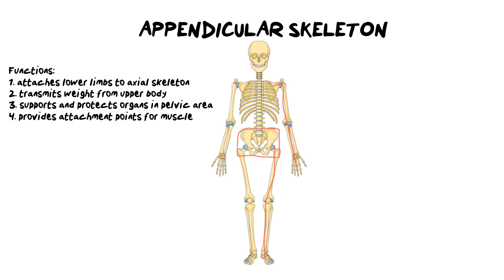The first function is it attaches your lower limbs to your axial skeleton. It transmits the weight from your upper body to your lower body, and actually your lower body is much stronger than your upper body because of this. It supports and protects all your organs in the pelvic area — your urinary system, reproductive, as well as your digestive system, which is housed in your lower pelvic area. And lastly, it provides attachment points for many muscles.